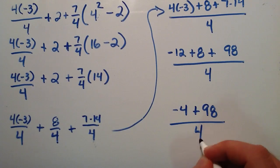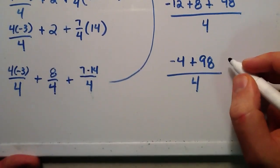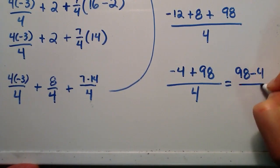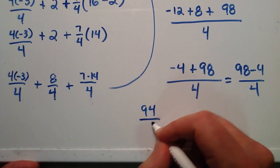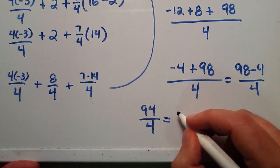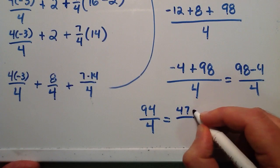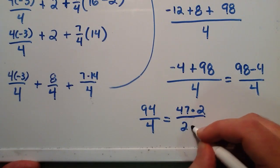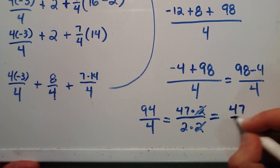So now we have 98 and negative 4 in the numerator over 4. By the commutative property of addition, we can reorder the terms to get 98 minus 4 over 4, which is 94 over 4. We can simplify this: dividing both numerator and denominator by 2, half of 94 is 47, and 4 equals 2 times 2, so the 2s cancel, giving us our final answer of 47 over 2.